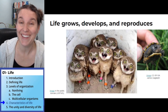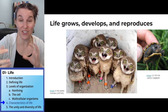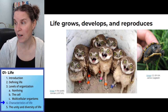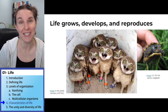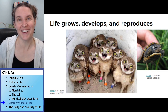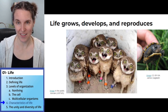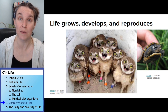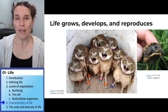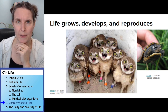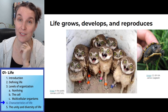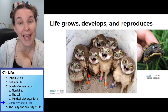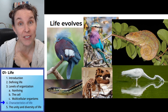Living critters grow, which means their cells multiply, and they develop over time and make more of themselves. Living things grow and develop and reproduce, and populations of living critters evolve.